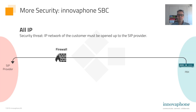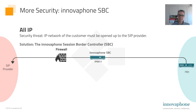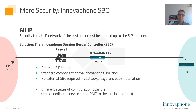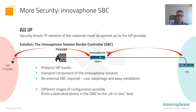On Inovaphone, an SBC is included in every instance. It can protect the SIP trunk even if you terminate the signaling of the external SIP trunk and build up a new one to the internal PBX. It's a standard component of the Inovaphone solution and you don't need to have an external SBC.